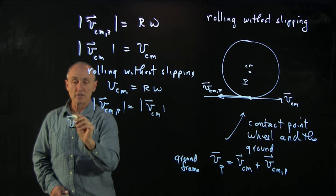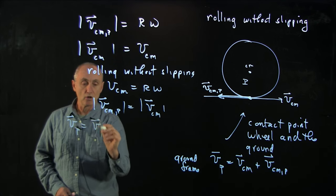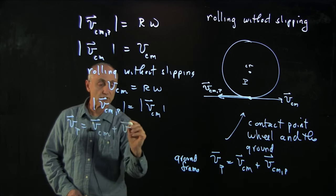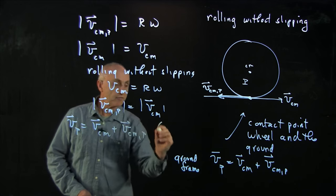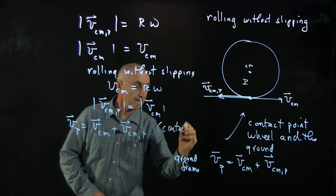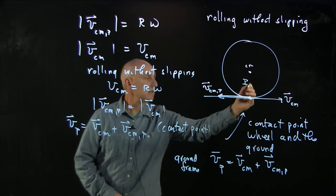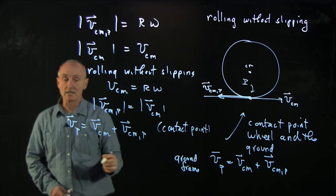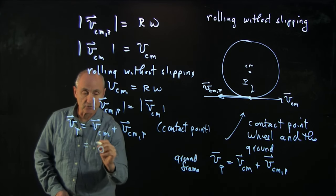And therefore, the velocity P, which is the sum of these two vectors for the contact point, that's when P is in contact with the ground, is equal to 0.